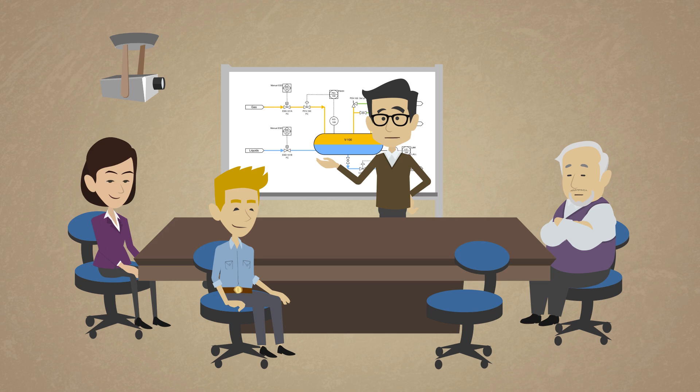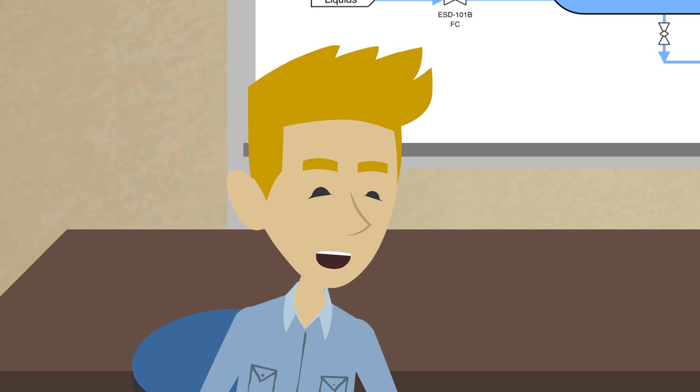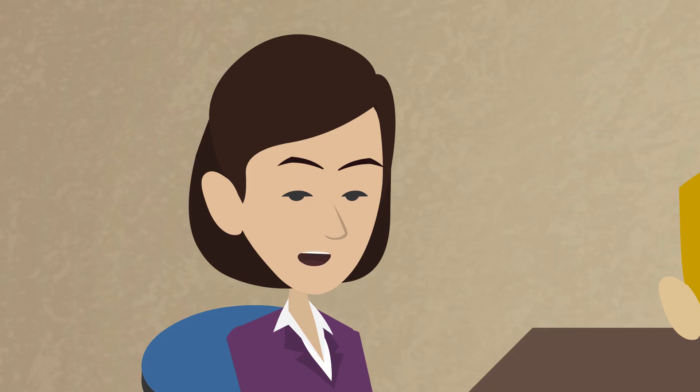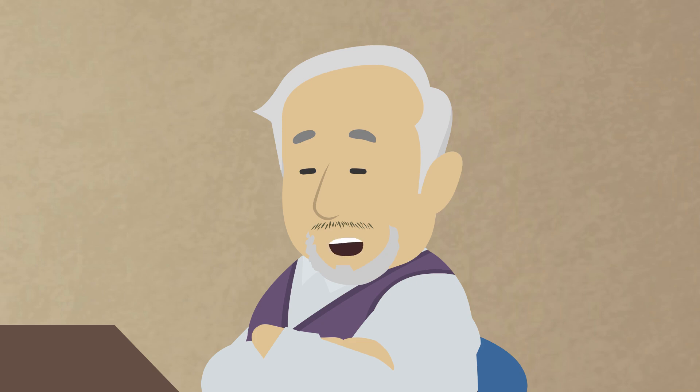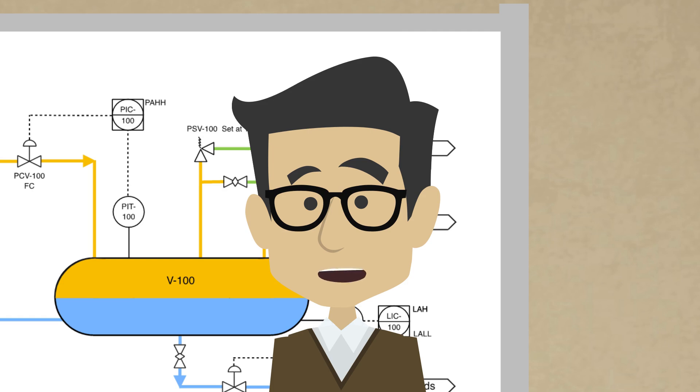Thanks for coming to this PHA. The process for today's meeting is to start with a HAZOP, and for any high-severity scenario, we will run a LOPA, which is a semi-quantitative method for assessing risk. Let's start with introductions. I'm Max, a facility engineer. I'm Amy, the process engineer. I'm Ian. I'm the senior process engineer and manager for this project. Is someone from operations coming? We can't start the meeting without them. Their perspective is essential.